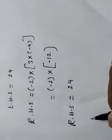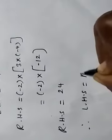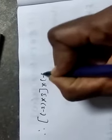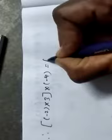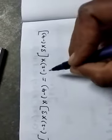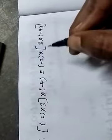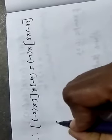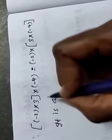Now, left-hand side equals right-hand side. The answer is 24 on both sides. So (minus 2 into 3) into minus 4 equals minus 2 into (3 into minus 4). The two sides give the same answer, 24. So it is the associative property.